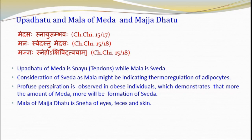Sweat maintains the moistness and softness of skin, and there is a reciprocal relationship between sweat and urine — increased sweating leads to decreased urine formation. The Mala of Majja Dhatu is the Snayu of eyes, feces and skin. Sebum may be considered as the unctuousness of skin; it is an oily secretion of sebaceous glands, a mixture of triglycerides, cholesterol, protein and inorganic salts. It prevents excessive evaporation of water from the skin, inhibits growth of certain bacteria, coats the surface of hairs and prevents dryness and brittleness of hair.